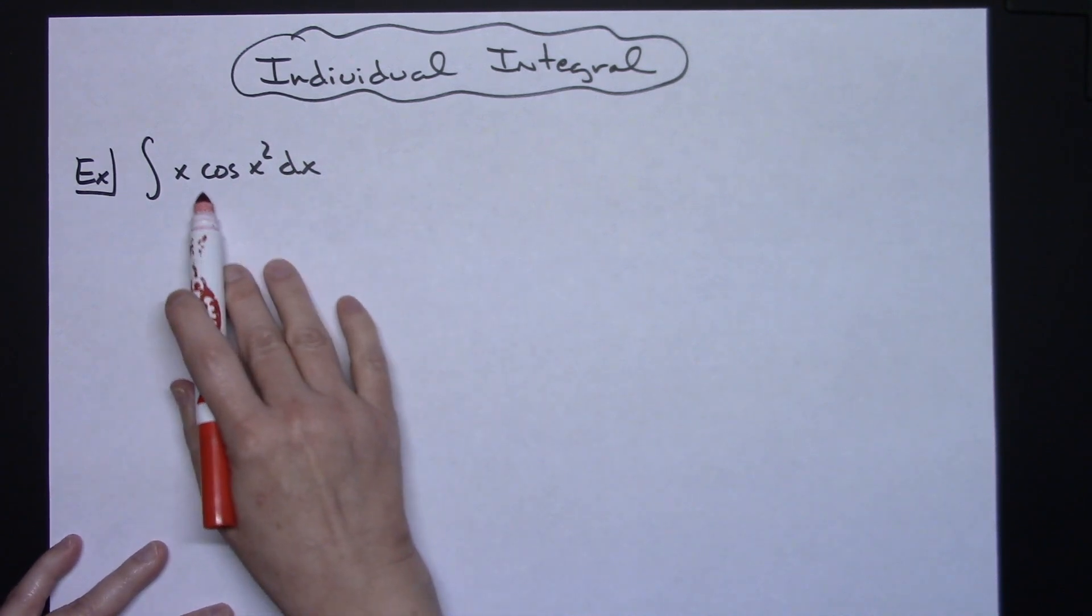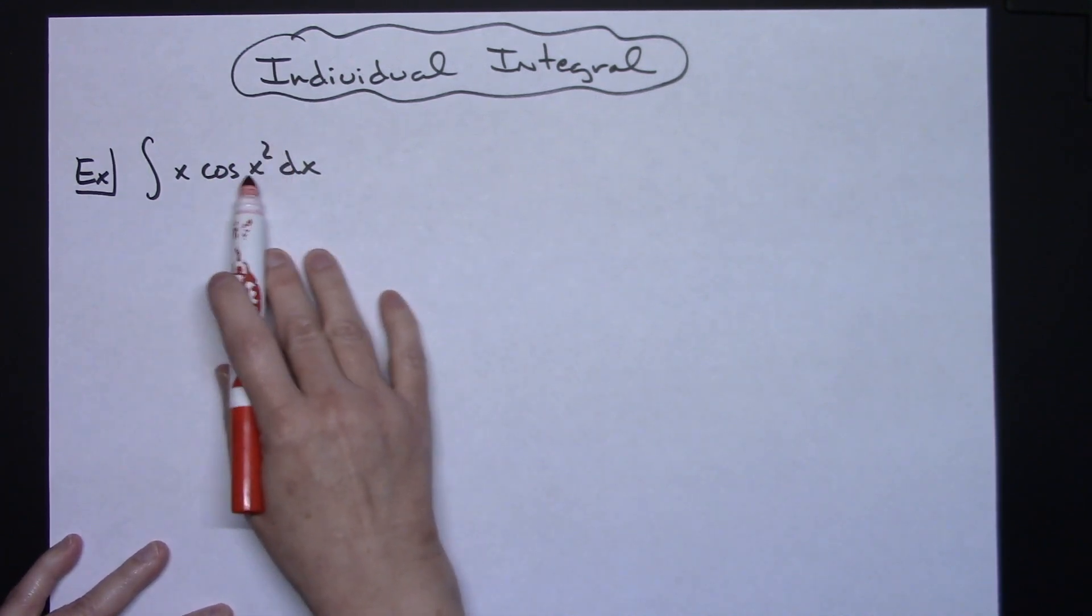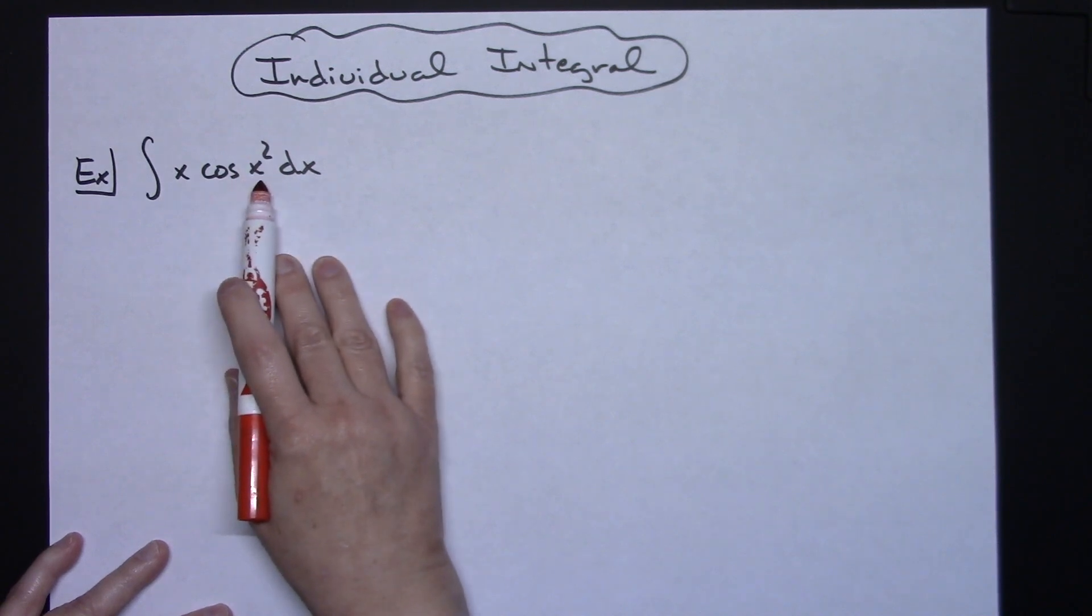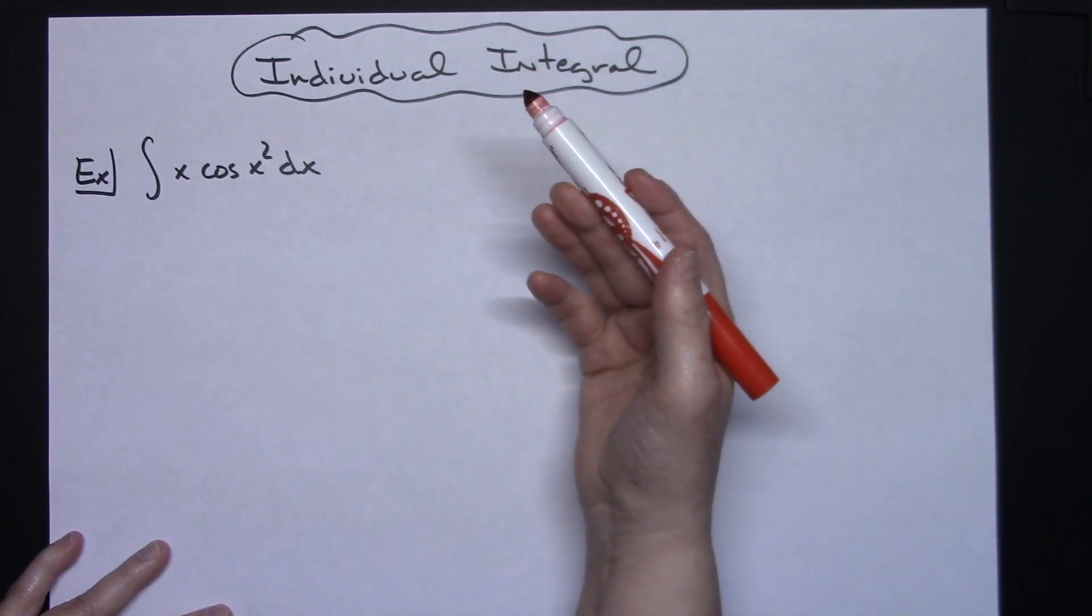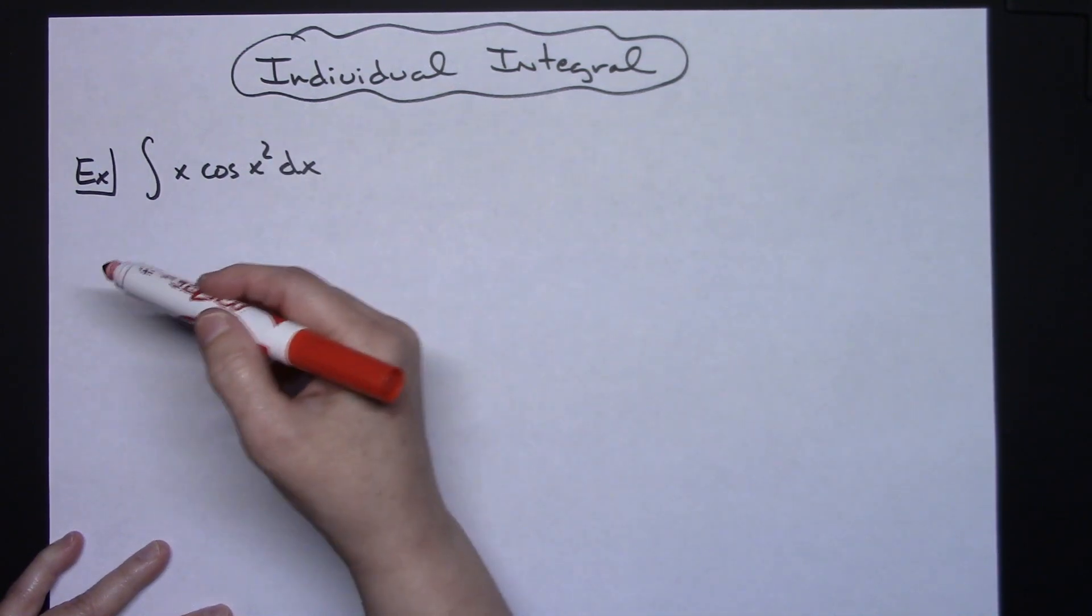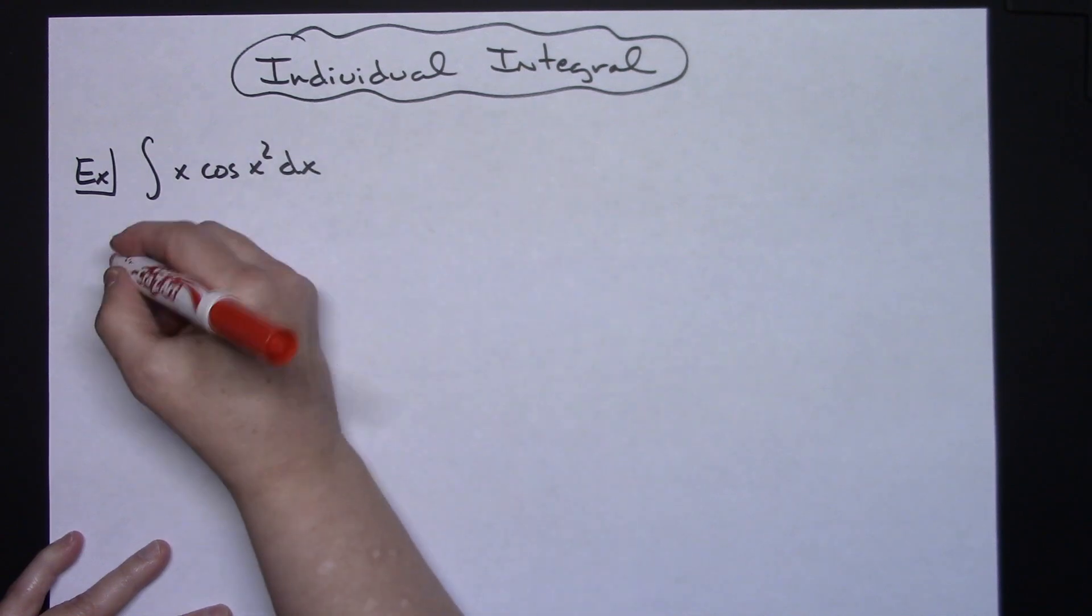Hopefully you've done enough that have trig limits in it that you realize usually that inside part of that trig function is what you're going to let your u be. Another way to look at it is if I look at this x squared and I know I take the derivative of that, I'm going to have a 2x, so that's good because then my x's are going to cross out.